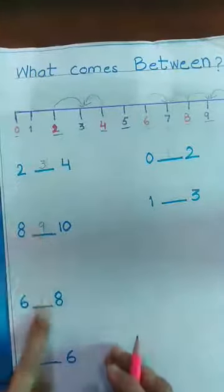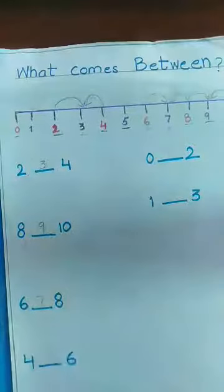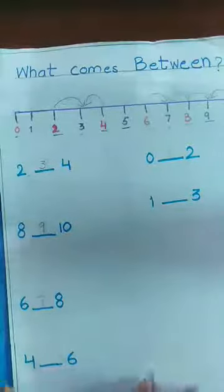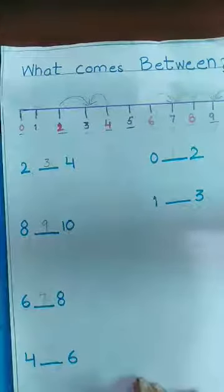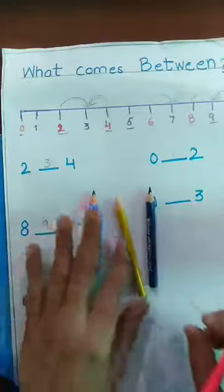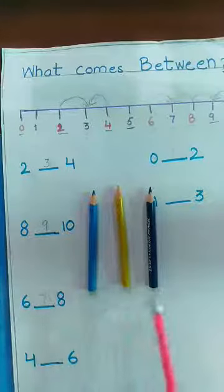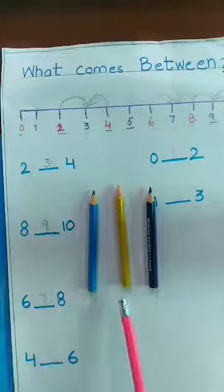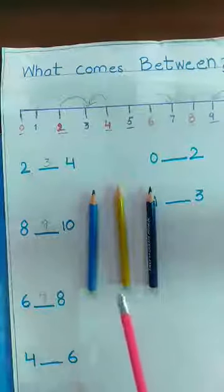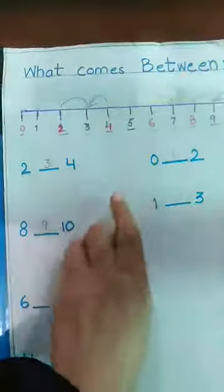So between means darmiyan mein. Humne darmiyan ki cheez dekhni hai. For example, yahan ordinary and light color hain. Which color comes in between these two colors? The yellow one. Yellow comes in between. Which color comes in between these two colors? Yellow. This way we will do after.